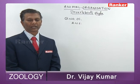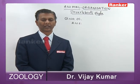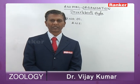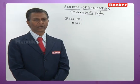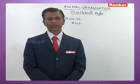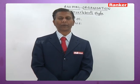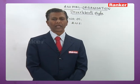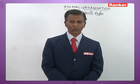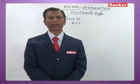Now we shall do certain questions on these invertebrate phyla. The first question: hookworm is the name given to — a) Trichinella, b) Trichuris, c) Ankylostoma, d) Wuchereria. Now, Trichinella spiralis is commonly called trichina worm, Trichuris is called whipworm, Ankylostoma is called hookworm, and Wuchereria is called filarial worm.